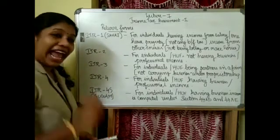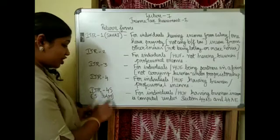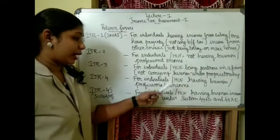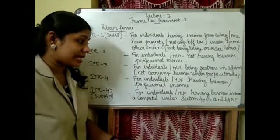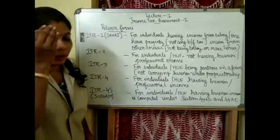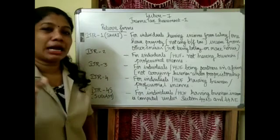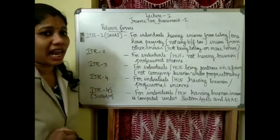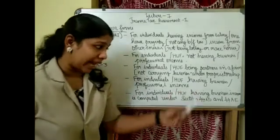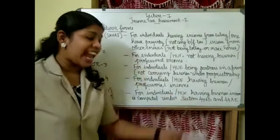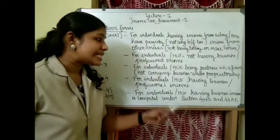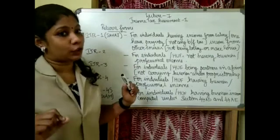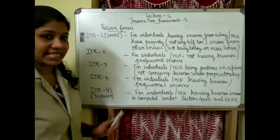ITR4S is known as SUGAM. It is applicable for individuals or HUF having business income computed under the presumptive taxation scheme under section 44AO. If you are having business income under this scheme, ITR4S applies.